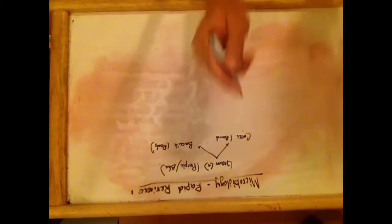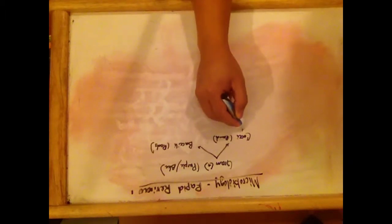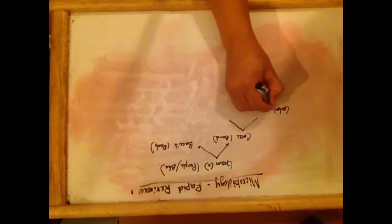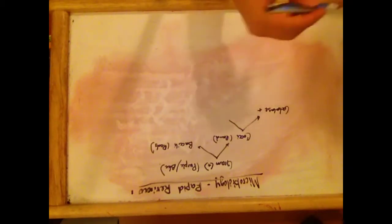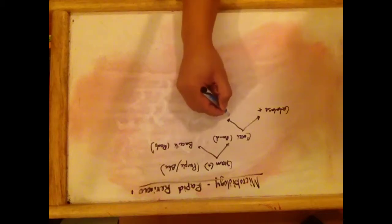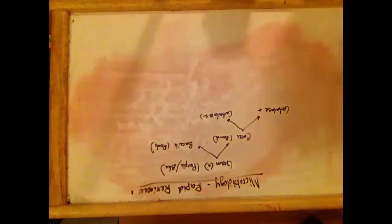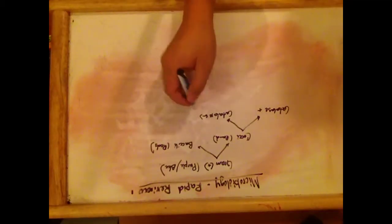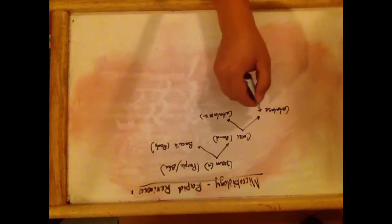For cocci, there are two organisms: one is Staphylococcus aureus, the other one is Streptococcus. To differentiate between the two, we need to see if they are catalase-positive, which appears in clusters, or catalase-negative, which are organisms that appear in chains — those are Streptococcus. Staphylococcus appears in clusters.